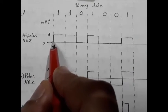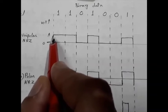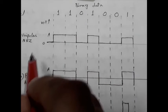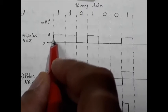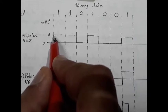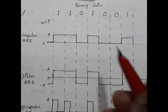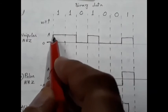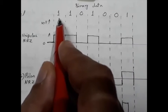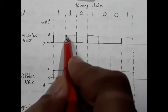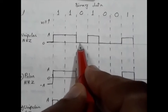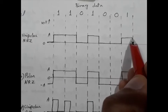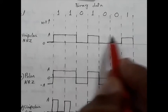In unipolar NRZ, unipolar means it contains only one type of potential — say positive potential — and NRZ means within a bit period it will never return to zero. Logic one is represented by a voltage A for the total bit time Tb, and logic zero is represented by zero volts. So for our sequence 1 1 0 1 0 0 1, the signal will be: positive A, positive A, zero, A, zero, zero, A.